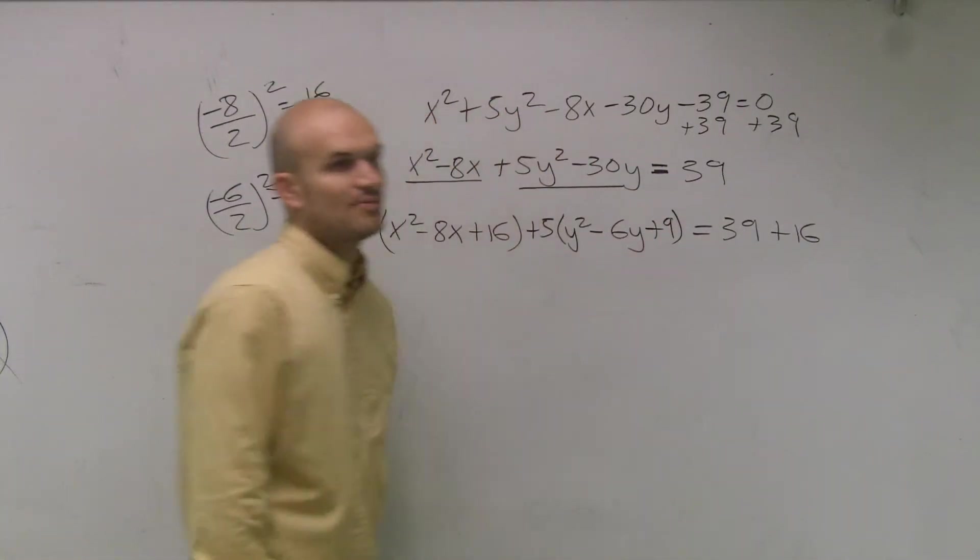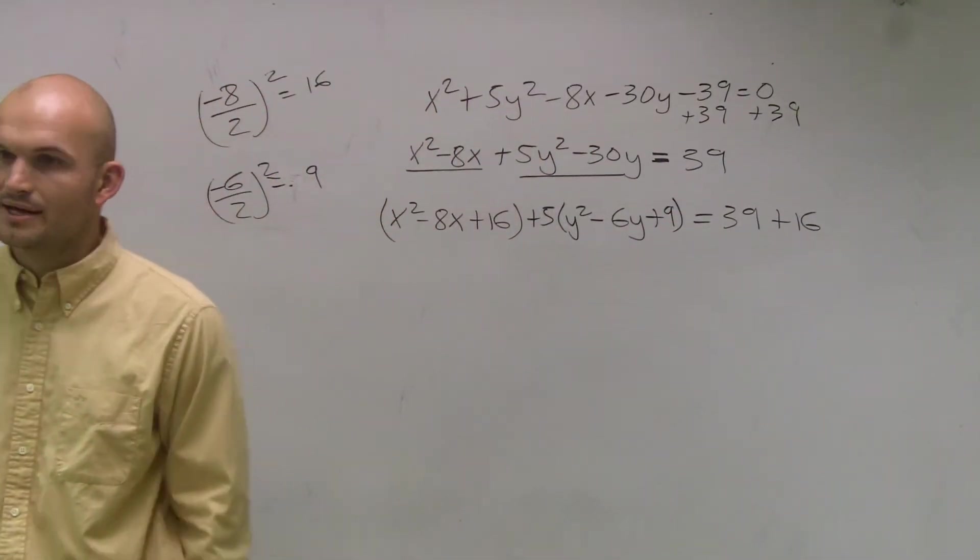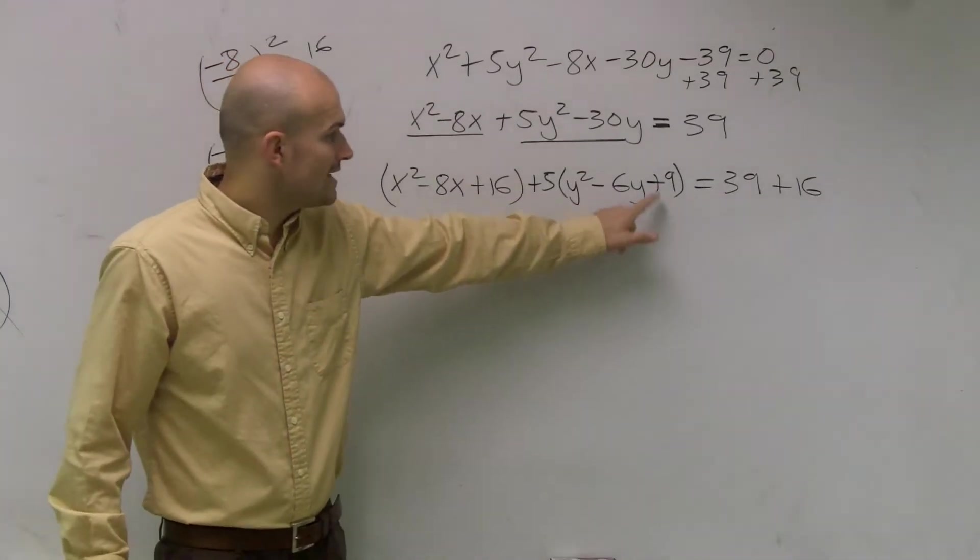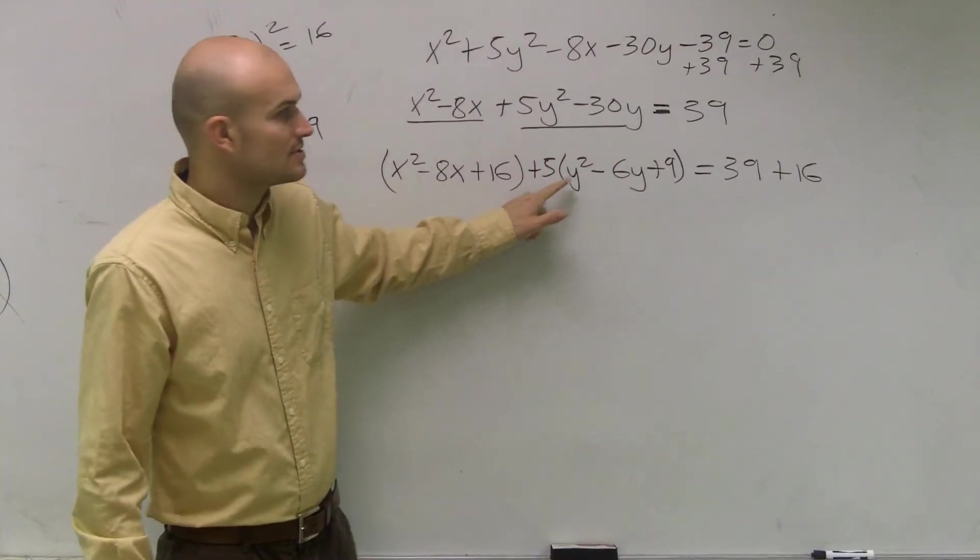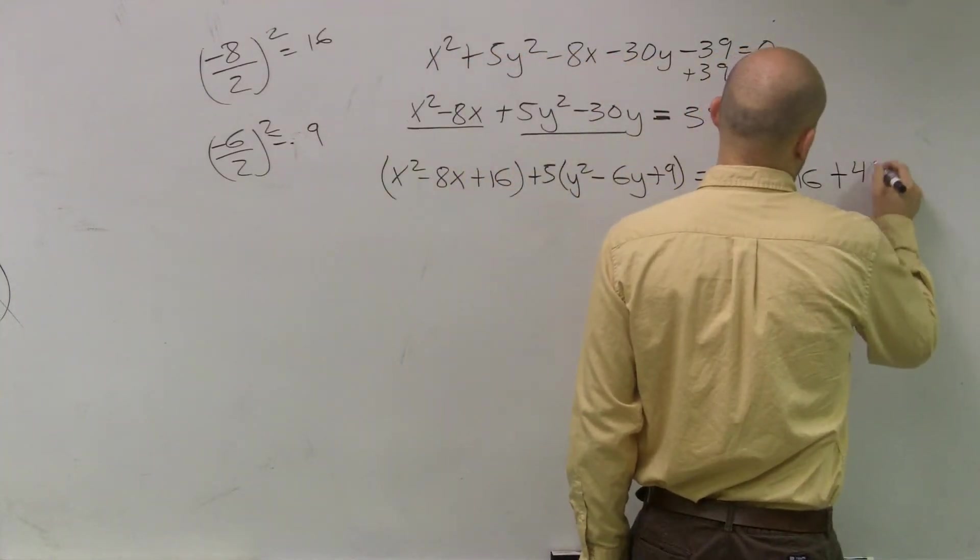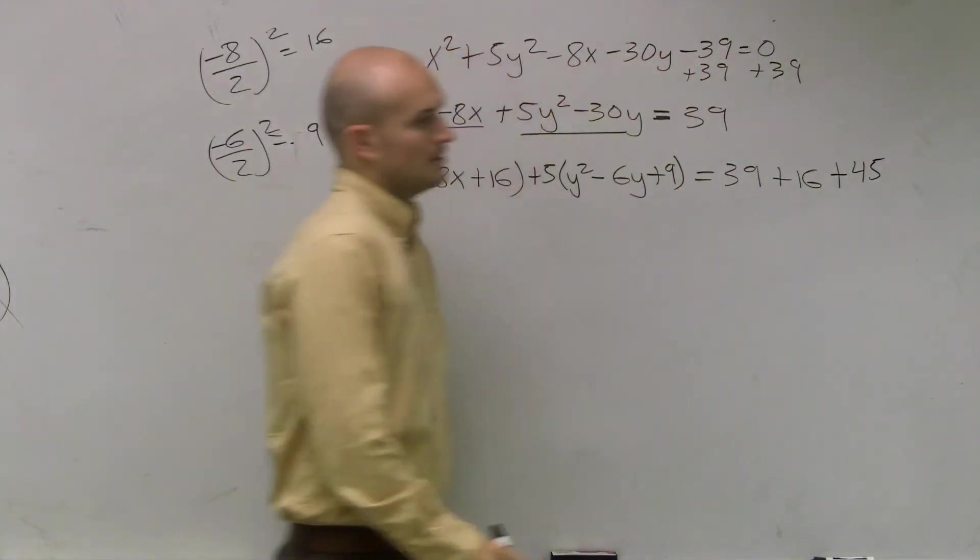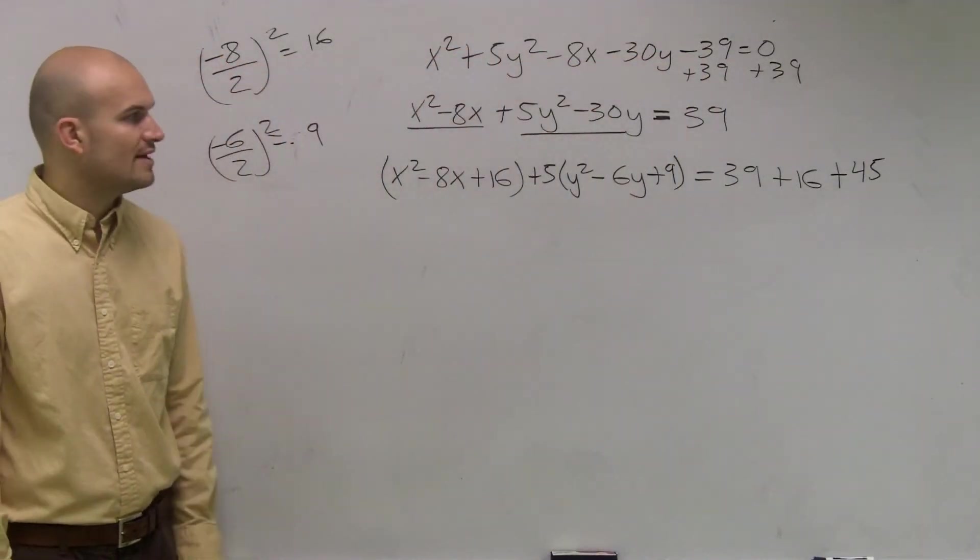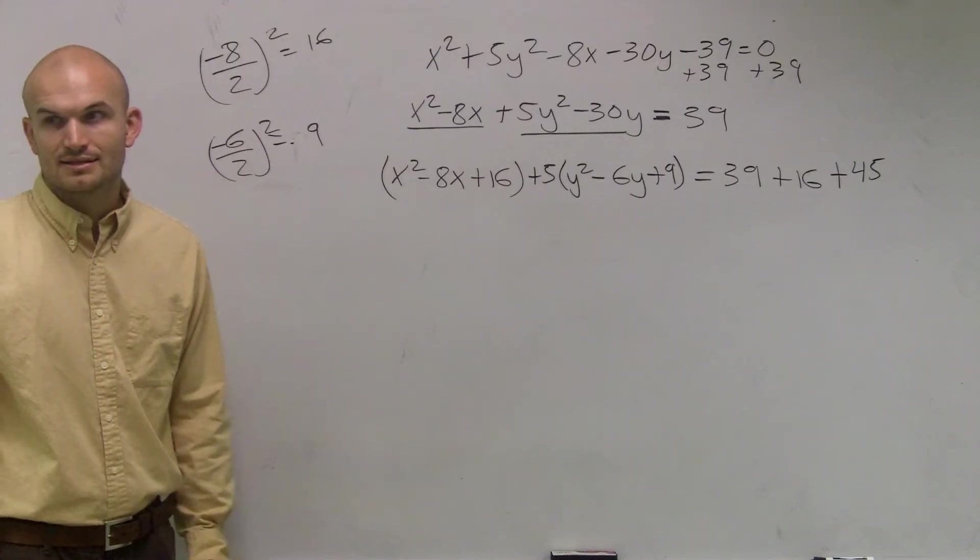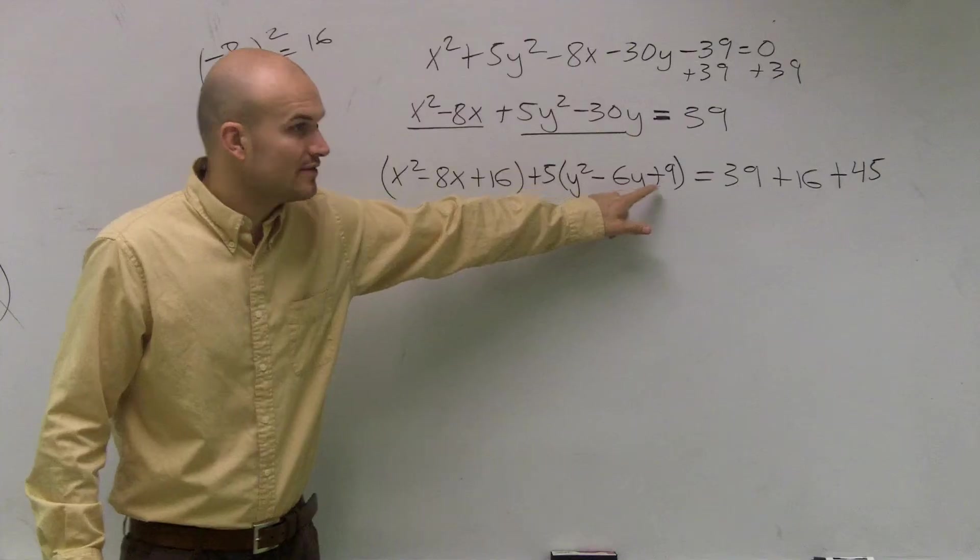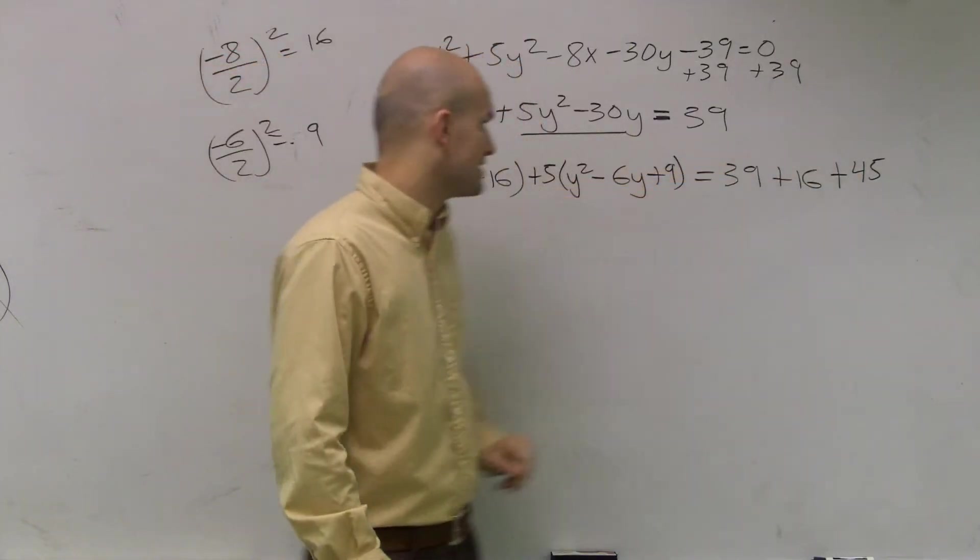So I add the 9 there, and here's the biggest problem where almost all students make their mistake. All right? So you're not adding 9 on the left side. You're adding a 9 times 5. So on this side, we need to make sure we add another 45. Does everybody see why I added 45 and why I did not add 9? Because it's really, really important. 5 times 9 is 45, so you've got to make sure you add 45 on that side.